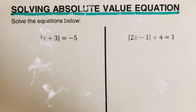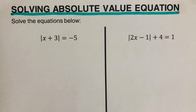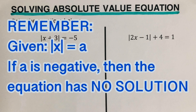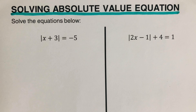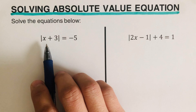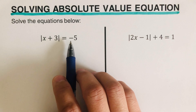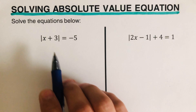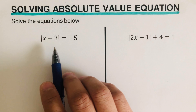Hello everyone. In this video we will be solving absolute value equations. Remember that if we're given absolute value of x equals a, and a is negative, then there is no solution. Inside the absolute value can be x or it can also be an expression, just like this one right here. We have |x + 3| = -5, and since the absolute value is already isolated by itself...